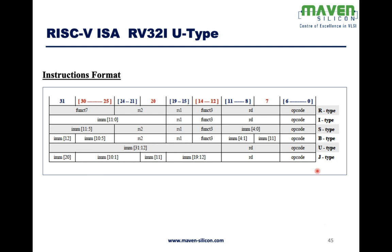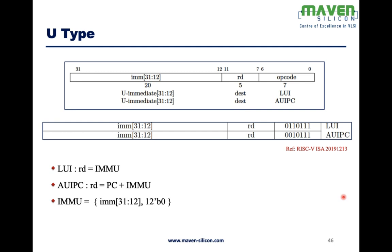We have seen J-type. Now let's look at U-type. There are two U-type instructions: LUI (Load Upper Immediate) and AUIPC (Add Upper Immediate to PC). For LUI, the destination register is set to the immediate value. The immediate value occupies bits 31 down to 12 — that's 20 bits — and the remaining 12 LSBs are set to 0. This format applies to both LUI and AUIPC.